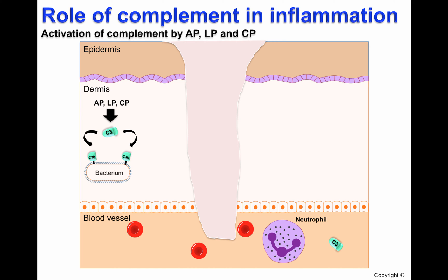C3b molecules will be deposited on the pathogen surface, leading to opsonization. C3a and C5a, which are pro-inflammatory cytokines, will also be produced. The activation of complement also leads to the formation of the membrane attack complex, which lyses pathogens.